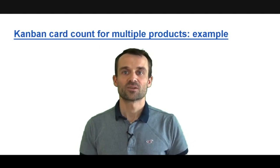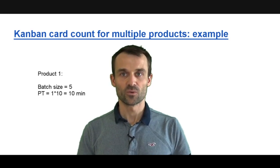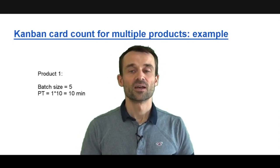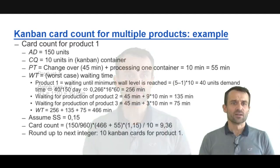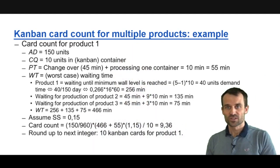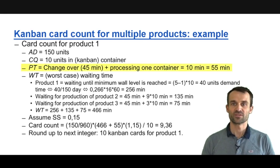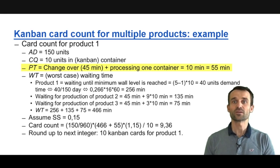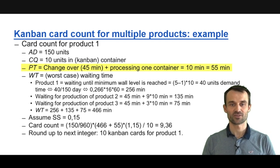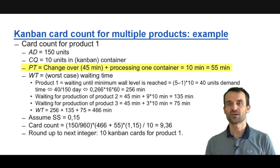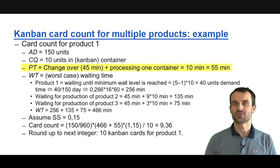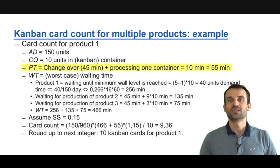Now we can calculate the card count for product one. Its minimum batch size is 5 Kanban cards and process time is 10 minutes per container quantity. When you start processing P1, you first need 45 minutes for the setup, then 10 minutes to produce one container quantity of 10 units. So processing time is 55 minutes — 55 minutes after starting, the first container with the first Kanban card leaves the system.